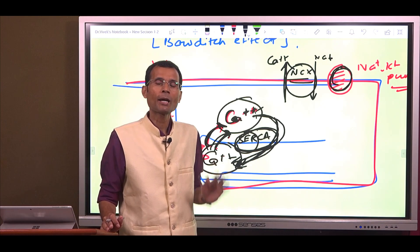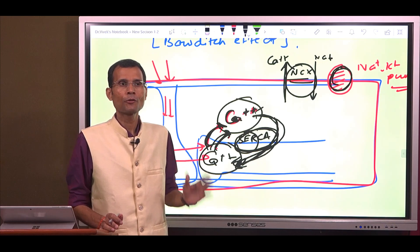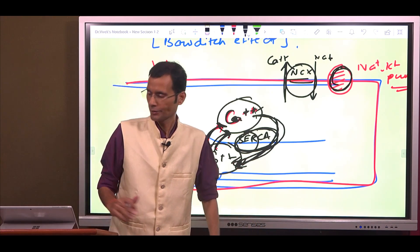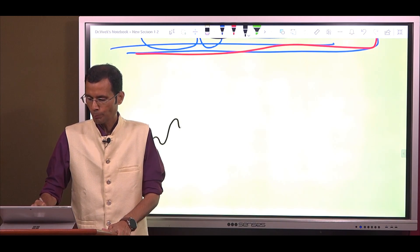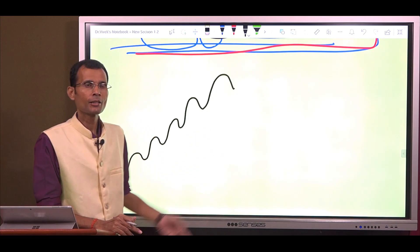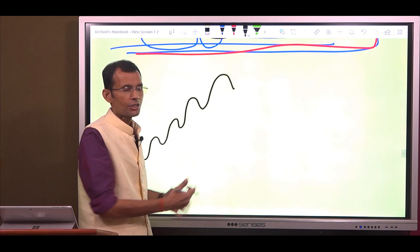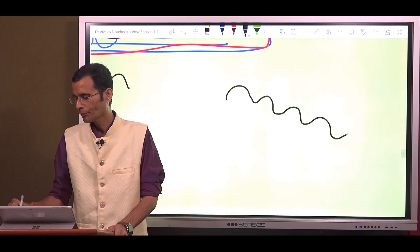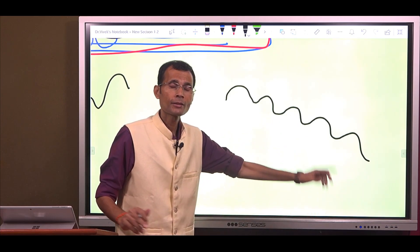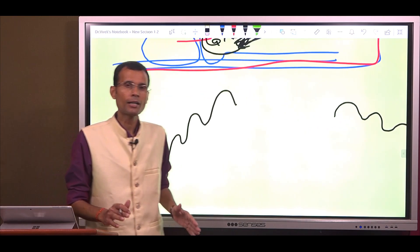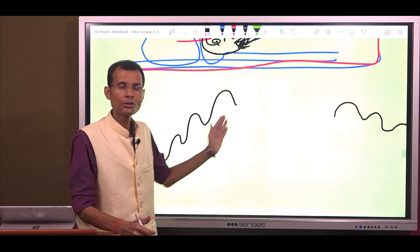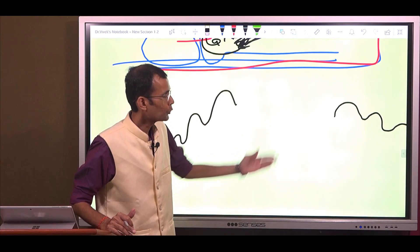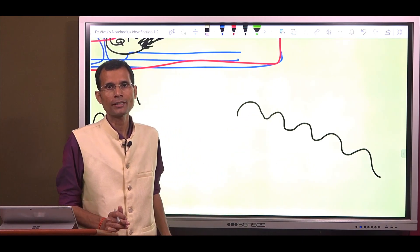Now let us see what happens in the condition of heart failure. A failing heart does not show a positive staircase effect — where contraction becomes stronger and stronger with increasing stimulation. Instead, in heart failure, the heart may show a negative staircase or inverse staircase, where contraction strength goes on decreasing. Let us understand why.